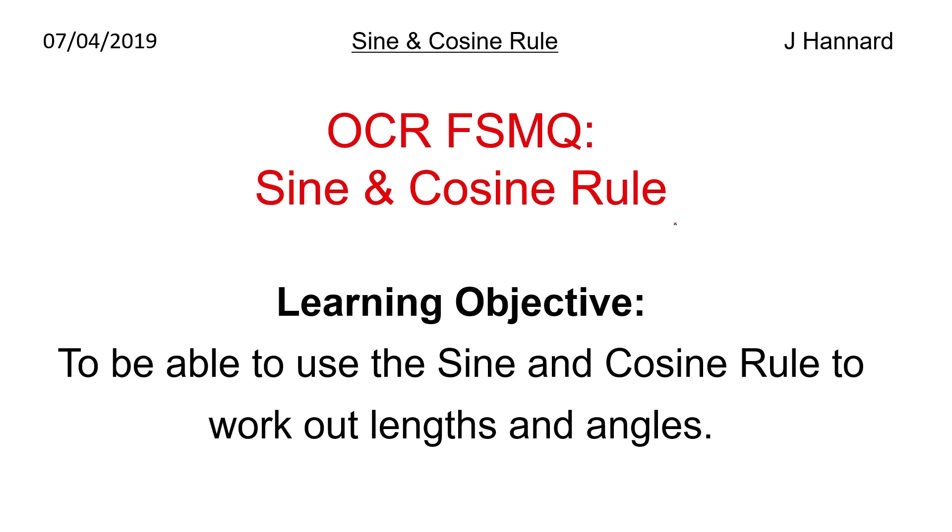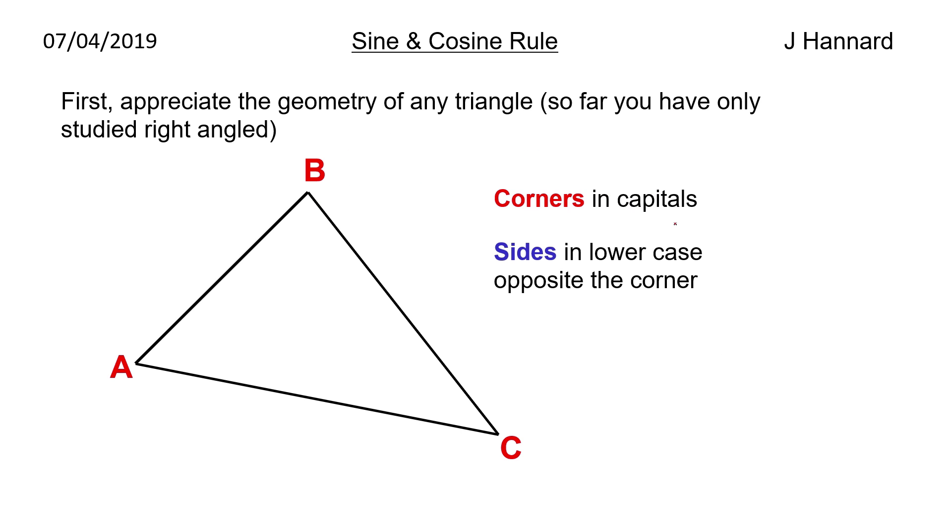But the learning objective today is to be able to use the sine and cosine rule to work out the lengths and angles. So first, appreciate the geometry of any triangle. So far you've only studied right angles. If you haven't seen the sine and cosine rule before then you will have only studied right angle triangles. We have the corners in capitals and the sides in lower case opposite the corner. So A goes to little a, B goes to little b and C goes to little c.